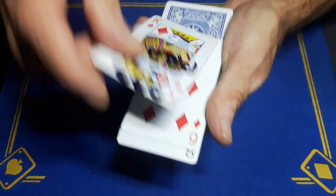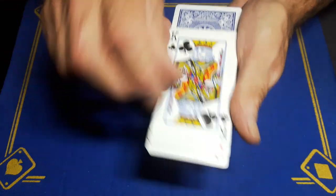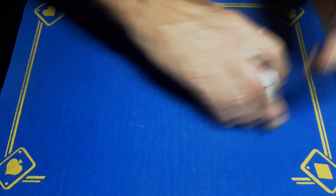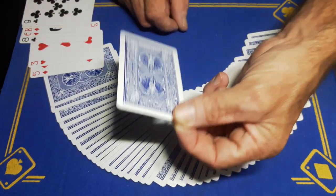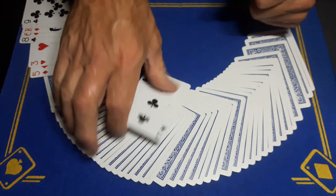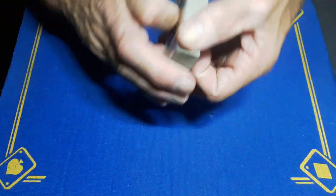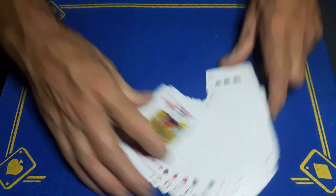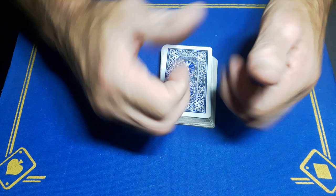And as soon as they call out stop, square it up, spread it, the first face-down card will be the chosen card. So that's how I did it guys, nice and simple, nothing to it. And one thing: God save the King. Cheers.